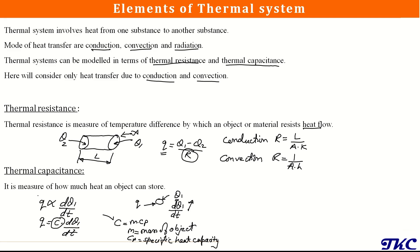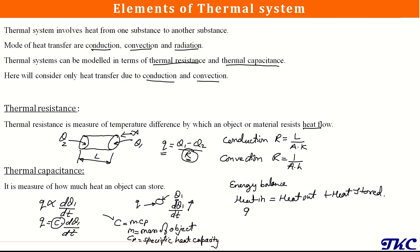Based on thermal resistance we need to find how much is the heat flow rate, and based on thermal capacitance we need to find how much is the heat storage. Based on energy balance, we can write: heat in equals heat out plus heat stored. Heat out is based on thermal resistance, and heat stored depends upon the capacitance of the object. In this way we get the mathematical equation for the thermal system, and by applying the Laplace transform we can get the transfer function.